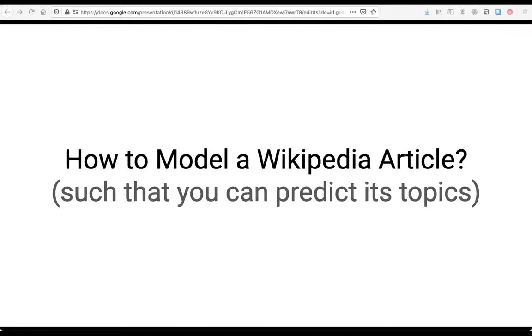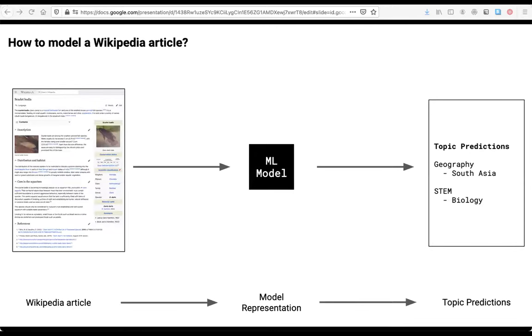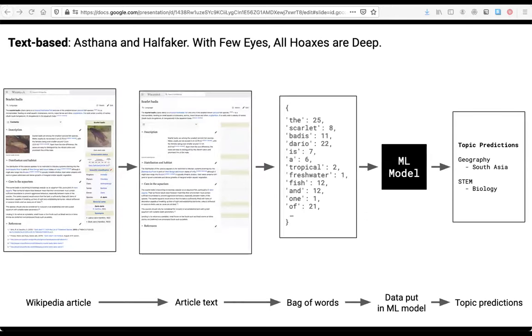So to be more specific, how do you represent a given Wikipedia article such that you can input it into a machine learning model of some sort that can then tell you what topics it predicts pertain to the article. Now, the most obvious approach, I think, perhaps is to use the text of the article. And this is what Astana and Hafiker did in their 2018 paper. They use a simple approach. It's quite effective. You could throw BERT or any much more complicated models over top too. But regardless, the text should carry plenty of signal regarding what an article is about. And every article has text.